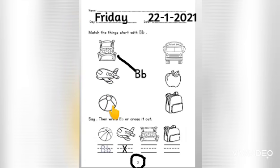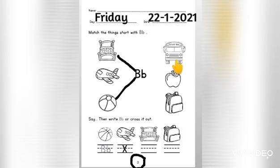How about this? This is ball. Bah bah ball. Let's match. This is ball. How about this? This is a picture of bus. Bah bah bus. Let's match.